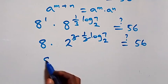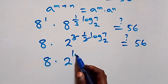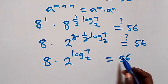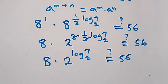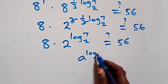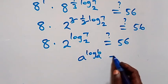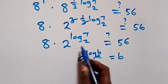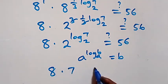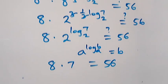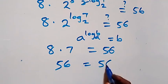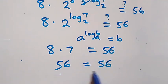We have 8 times 2 raised to power log₂7. Using the identity a raised to power log base a of b equals b, this becomes 8 times 7, which equals 56. The left-hand side equals the right-hand side — confirmed.